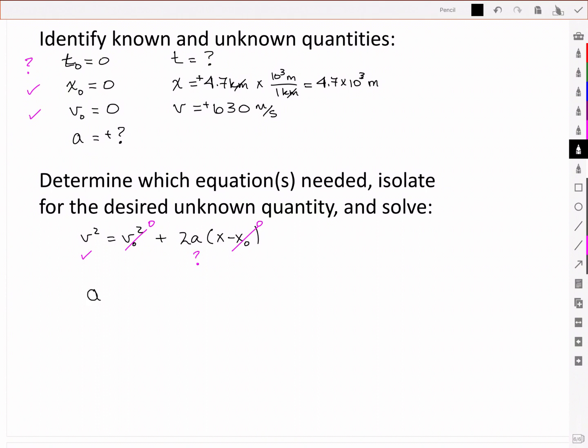In other words, I now have acceleration is equal to v squared divided by 2x. And make sure I plug in the correct values, 630 meters per second. That all gets squared. And on the bottom, I've got 2 times my position, which I saw was 4.7 times 10 to the 3 meters.